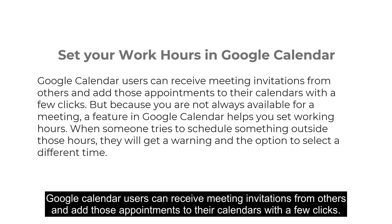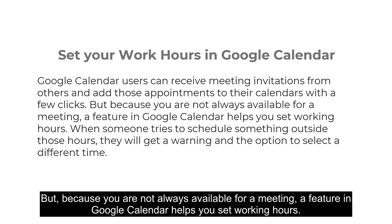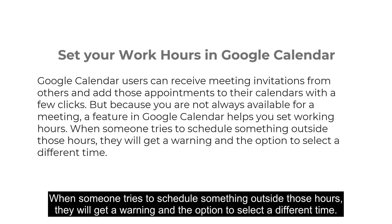Google Calendar users can receive meeting invitations from others and add those appointments to their calendars with a few clicks. But because you are not always available for a meeting, a feature in Google Calendar helps you set working hours. When someone tries to schedule something outside those hours, they will get a warning and the option to select a different time.